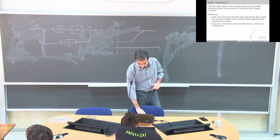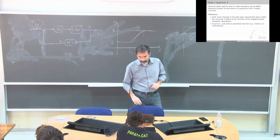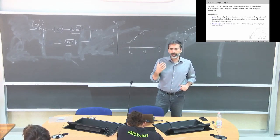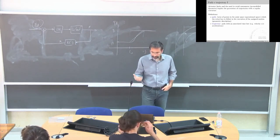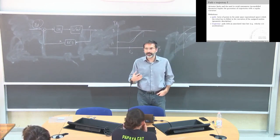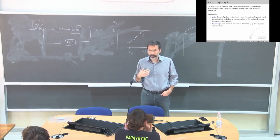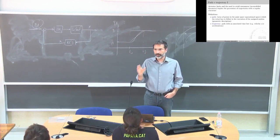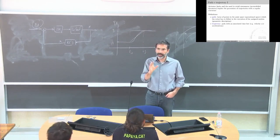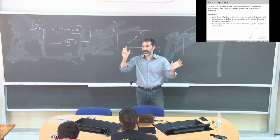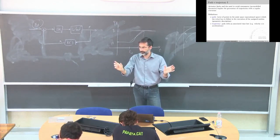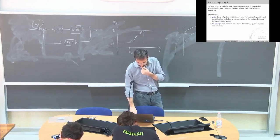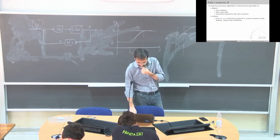A definition: when I talk about a path, path is a geometric concept — it is the locus of points that I want to follow. When I use the term trajectory, I give a time law to the path. Path is geometric; trajectory is geometric plus time.